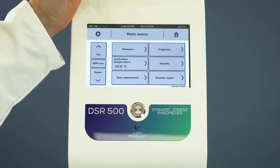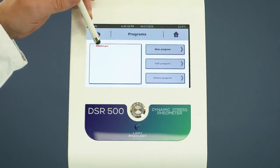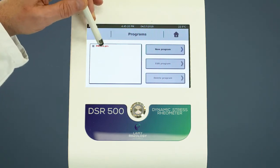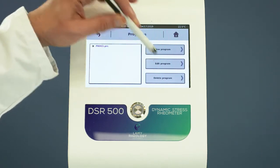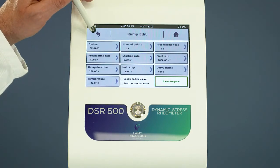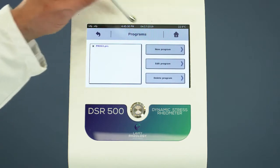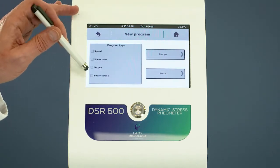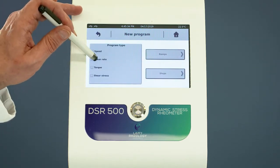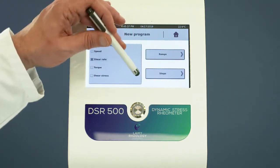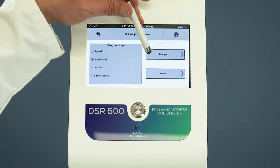Select programs to create, edit, or delete a method. Select new program. The rheometer can set the ramp or step program for the speed, the shear rate, the torque, or the shear stress.